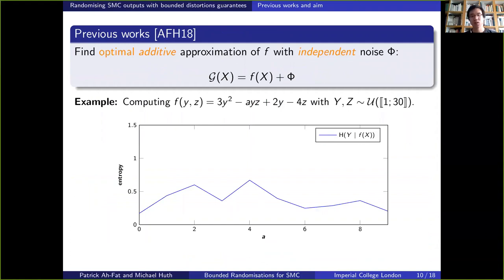In fact, in previous works, we saw the particular case of this optimization problem, where we assumed that g was an additive approximation of f, meaning that it could be written as g of x equals f of x plus phi, where we further assumed that the noise phi was independent from the output of f. The Laplace mechanism in differential privacy, for example, obeys this equation.